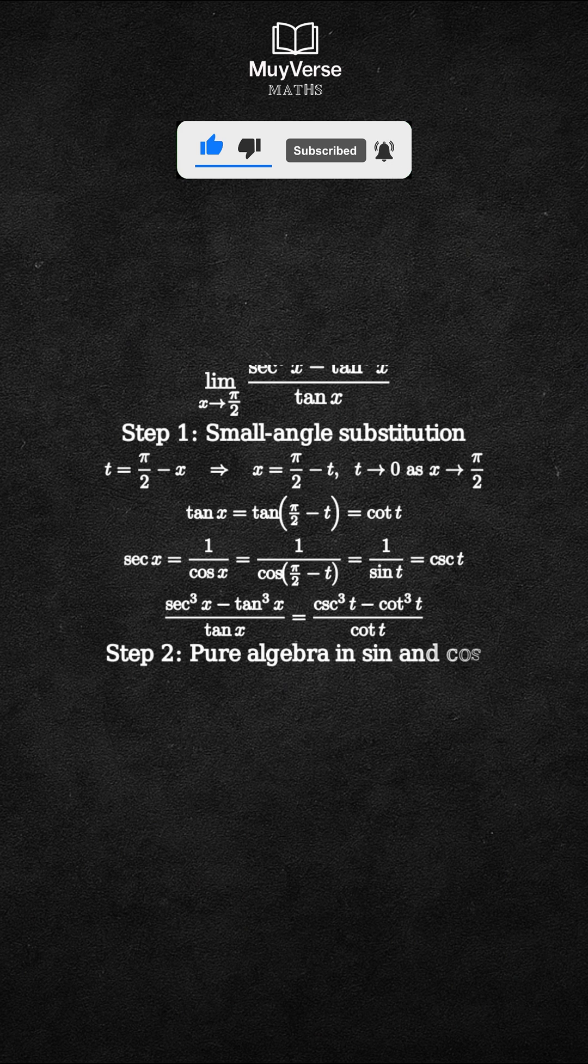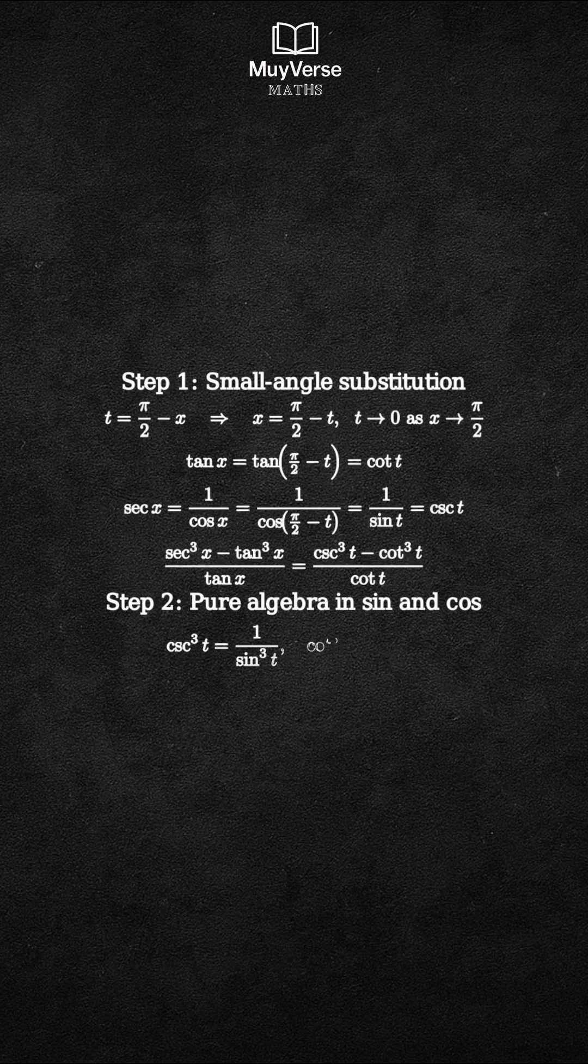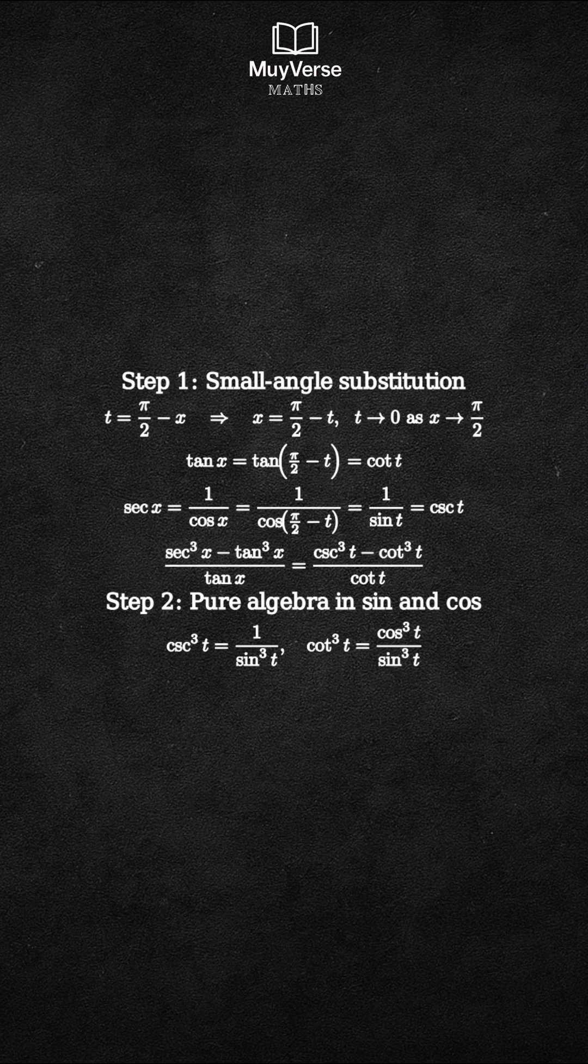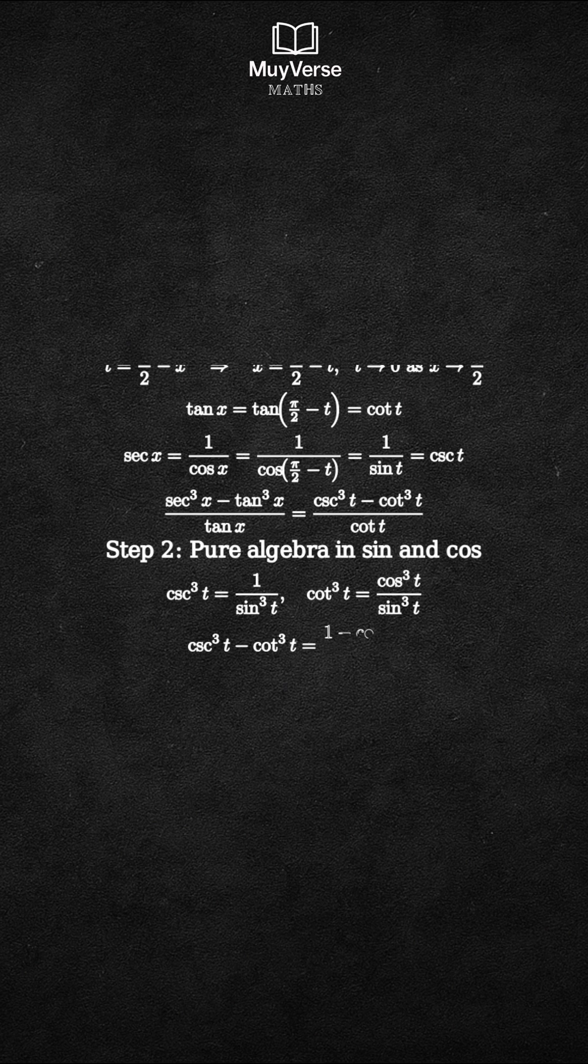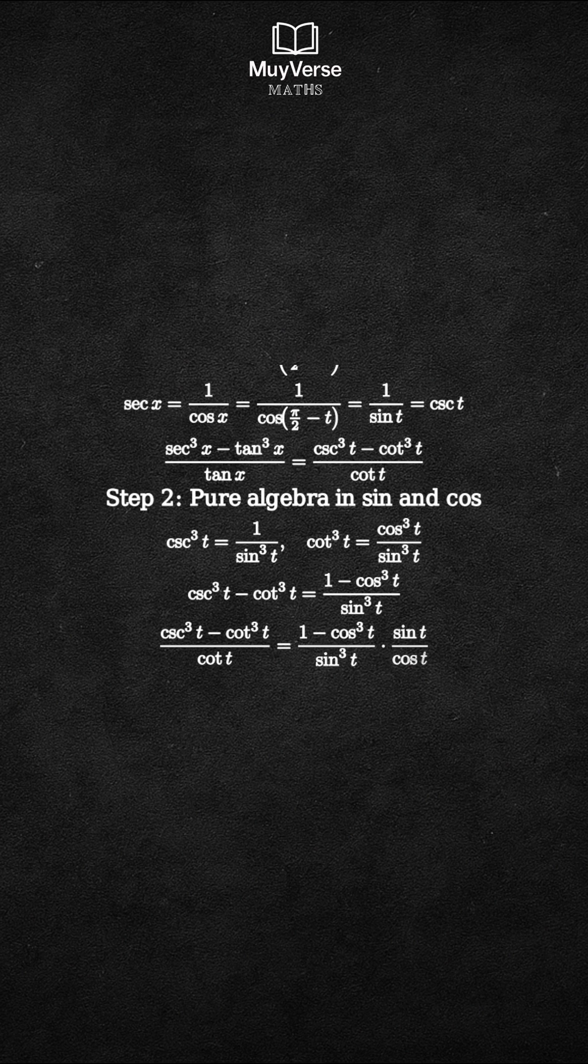Step 2: Simplify algebraically using sine and cosine. Write csc³t as 1/sin³t and cot³t as cos³t/sin³t. Then the numerator becomes (1 - cos³t) all over sin³t. Now divide by cot t, which is multiply by sin t over cos t.